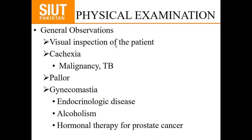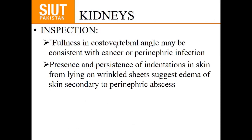Now the physical examination. It begins with general observation — visual inspection of the patient, physique, build, and ECOG status. If the patient is cachectic, think of malignancy or tuberculosis. If pale, think of bladder cancer. Look for gynecomastia in males for any endocrine disease, alcoholism, or hormonal therapy for prostate cancer. For the kidney, inspection: fullness in the costovertebral angle may be consistent with cancer or perinephric infection. Persistence of skin indentations from lying on sheets suggests edema secondary to perinephric abscess.